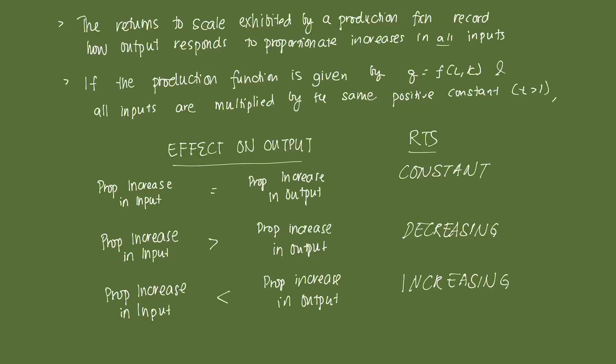Returns to scale exhibited by a production function is a record of how output responds to proportionate increases in all inputs. Note that we mean all inputs must be increased by roughly the same proportion. Consider a production function given in the form of a two-input production function, which is a function of labor and capital. We increase all inputs by some positive constant greater than one — say we want to double it, we multiply both L and K by two.